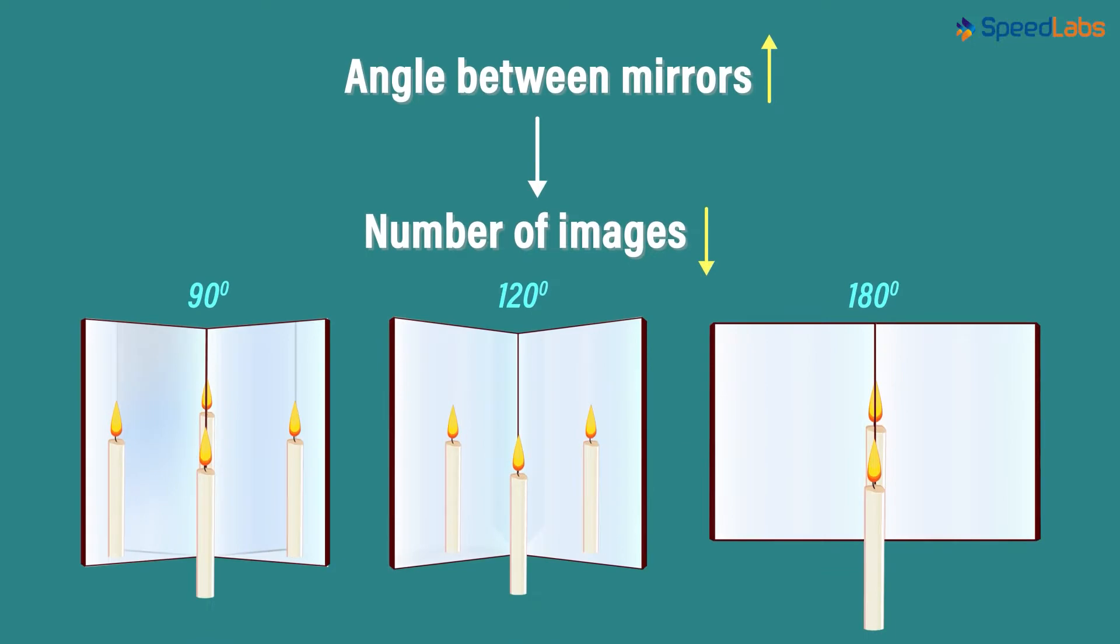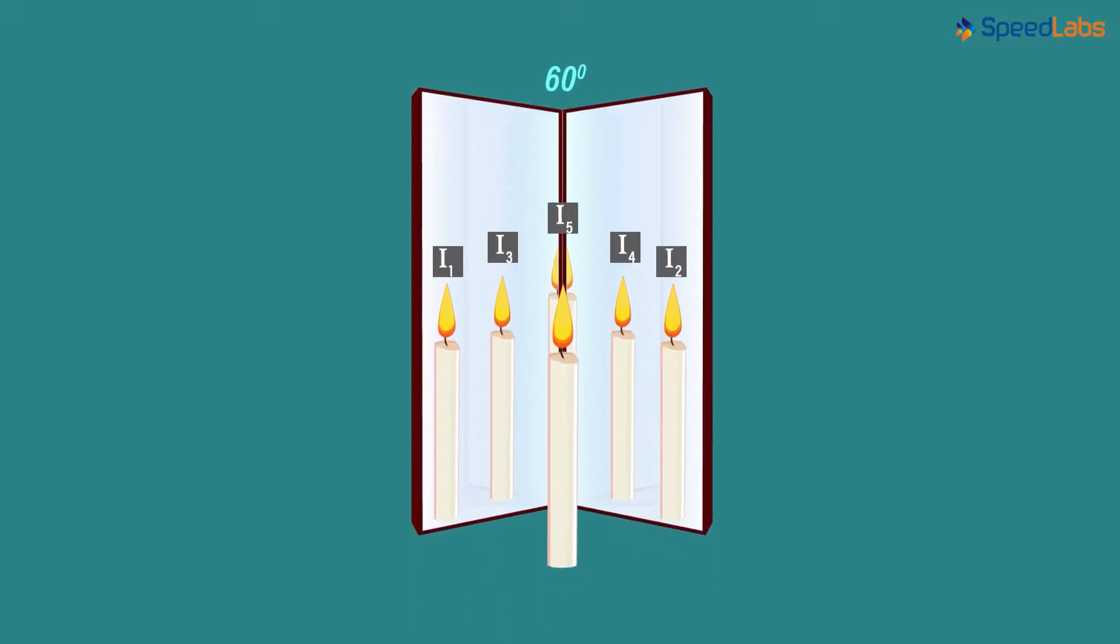And remember that in all cases, we are assuming the object to be right along the central line. Sometimes, we don't really see the images exactly the same way. For example, consider two mirrors with a 60 degree angle between them. We see that this image I5 is present half in the first mirror and half in the second one. If we change the position of the object, then this will not be the case.